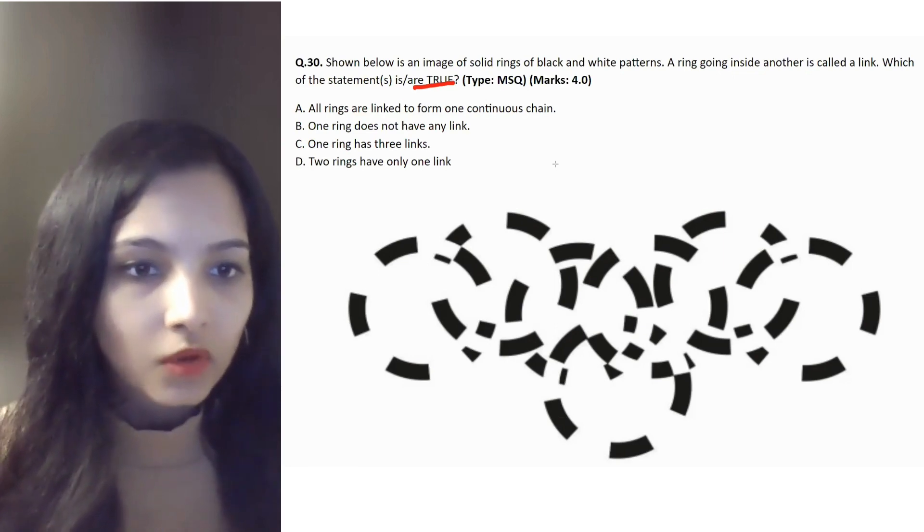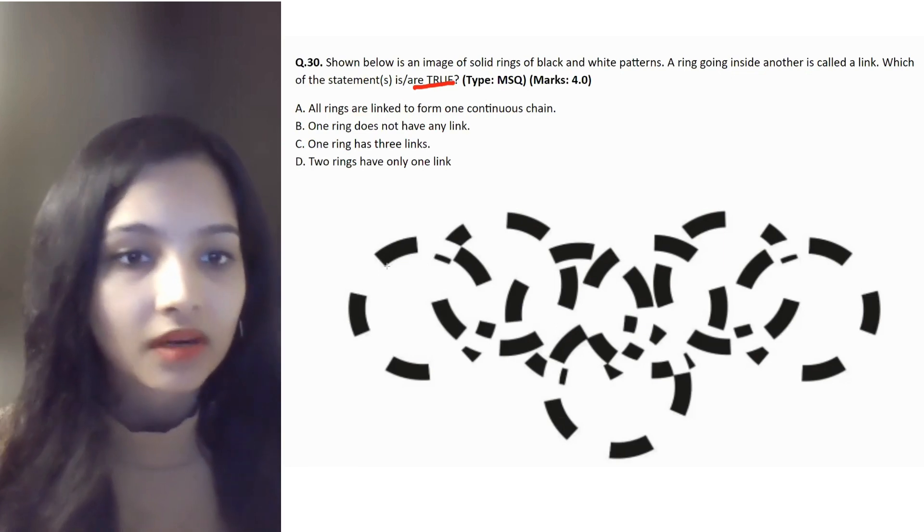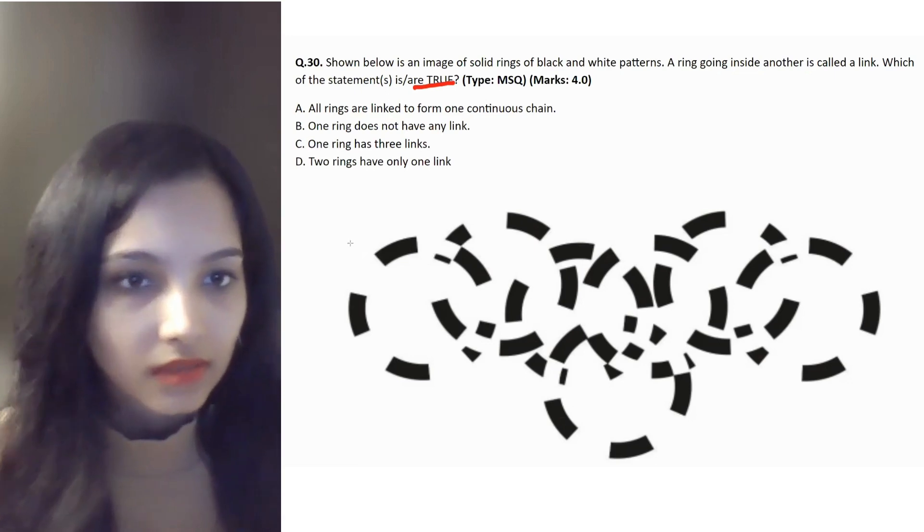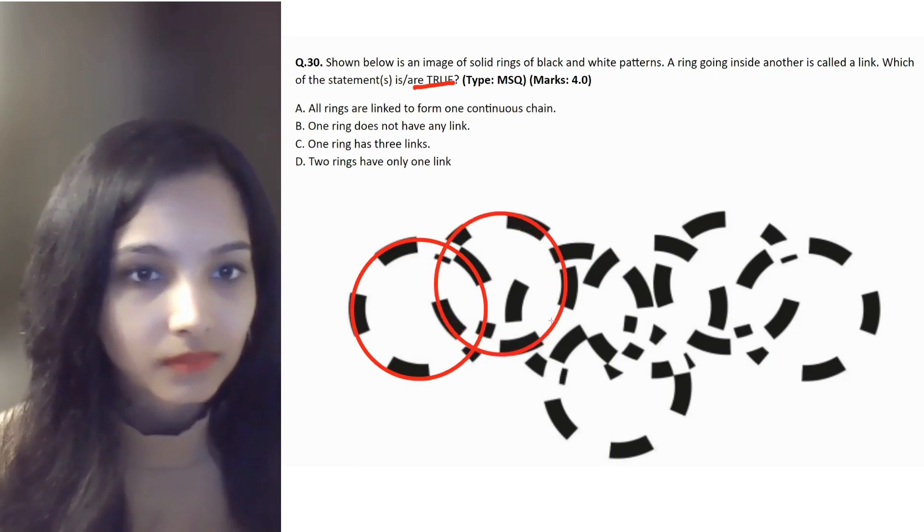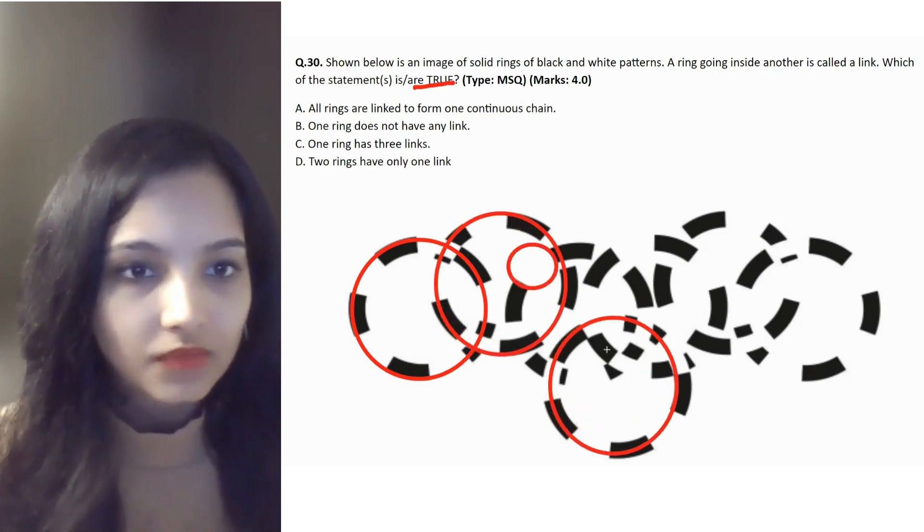Statement A: all rings are linked together to form one continuous chain. Is it forming? Let's check it out. So, this is one ring, another. It is forming.